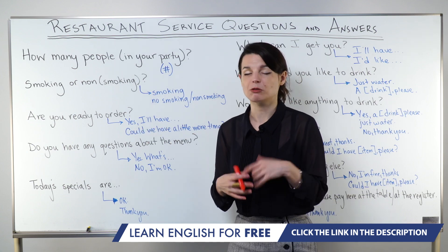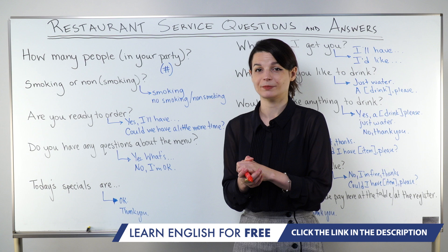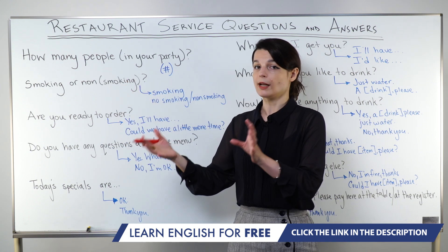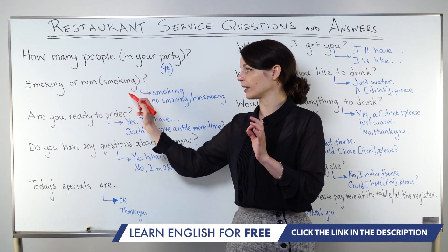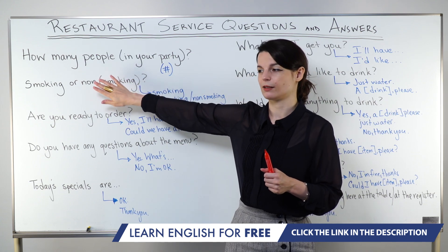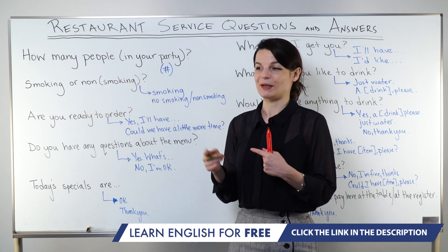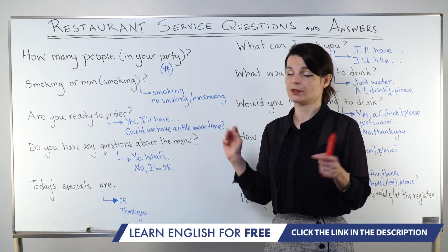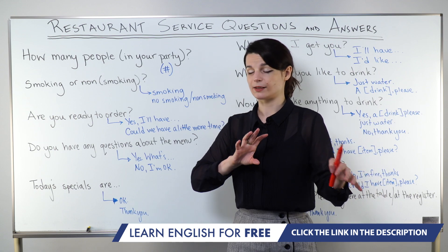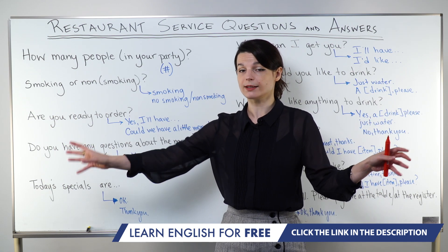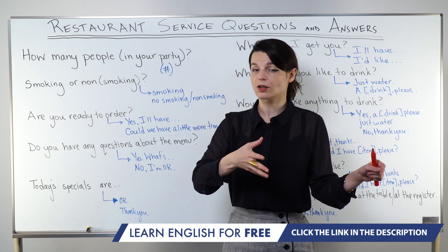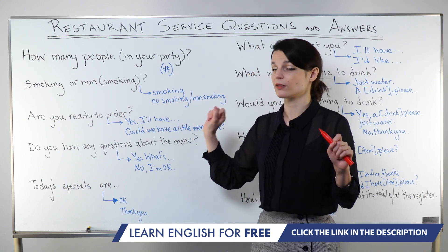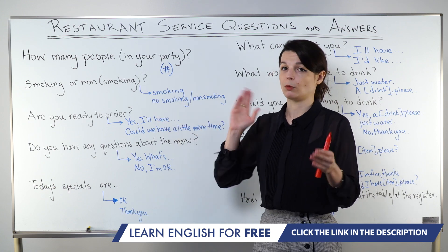After that, the next question in many cases is the staff will ask you 'Smoking or non?' or 'Smoking or non-smoking?' Sometimes the staff might say 'smoking or non' because we understand it means non-smoking. To answer, just say 'smoking,' 'no smoking,' or 'non-smoking.' Some restaurants have smoking and non-smoking seats, so if you have a preference, say 'smoking, please' or 'non-smoking, please.' Either will communicate the idea.